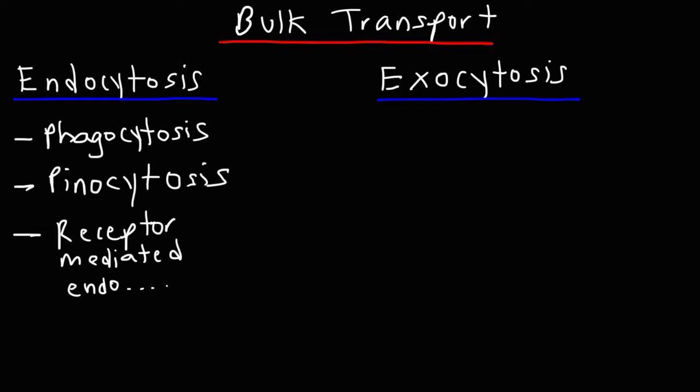So in the case of exocytosis, the cell exports material outside of it. So that's how it gets stuff out. Endocytosis is the process by which cells take in the material.